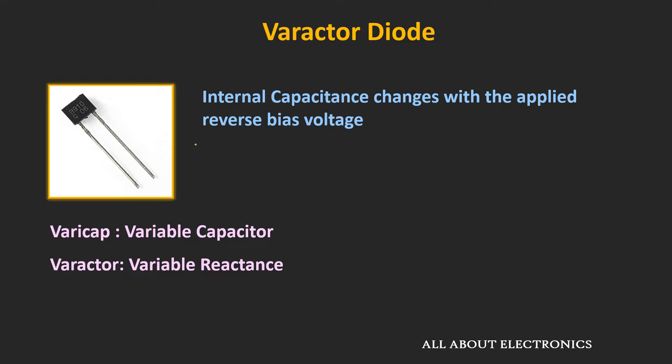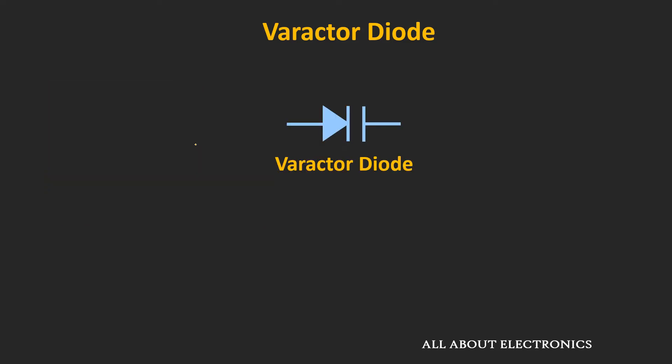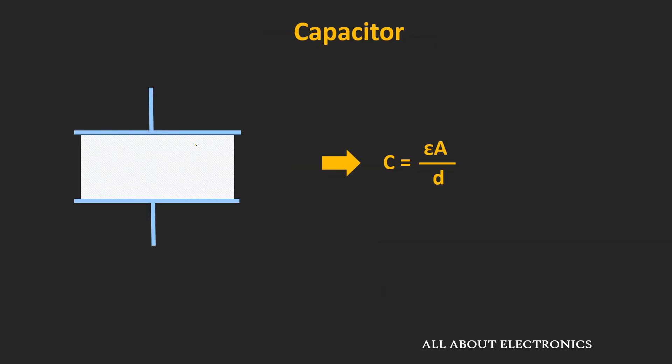This is the symbol of the varactor diode, which indicates that it is a P-N junction diode. But unlike a normal rectifier diode, it is intended to be used as a capacitor. To understand the working of this varactor diode, first let's see how we can change the capacitance of a parallel plate capacitor.